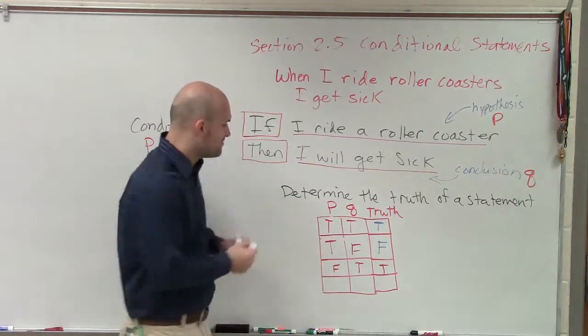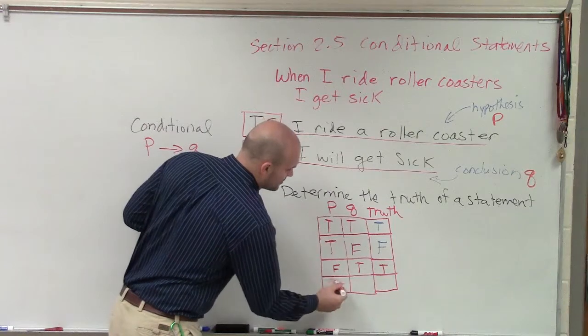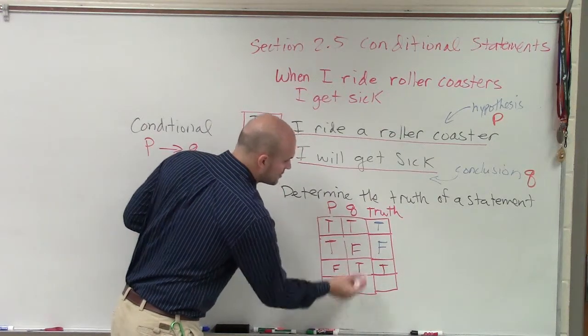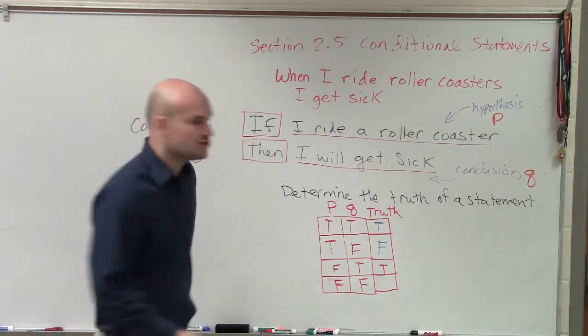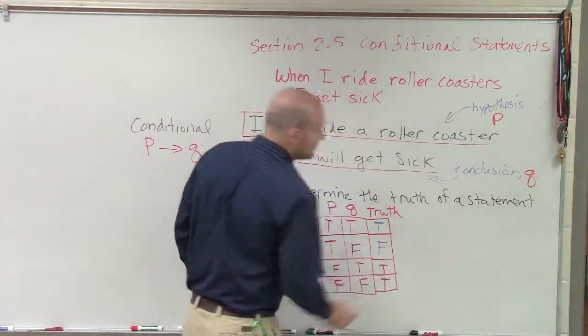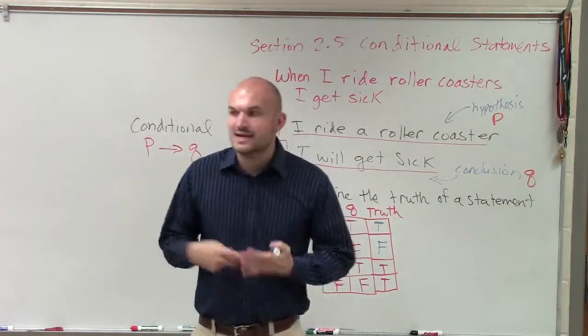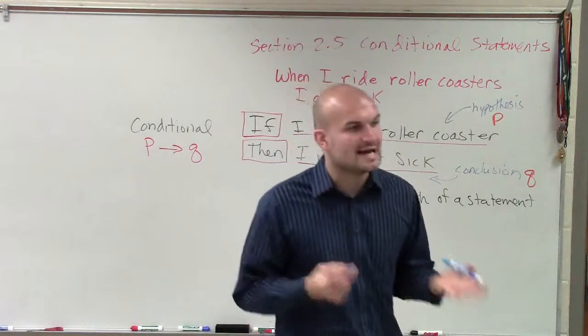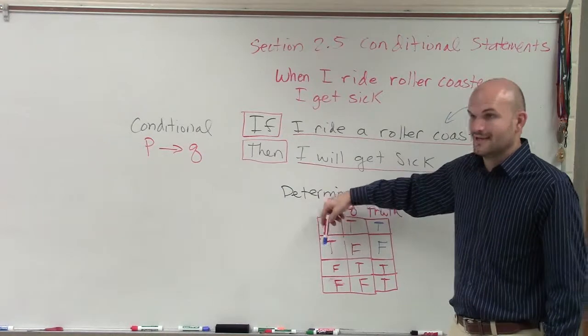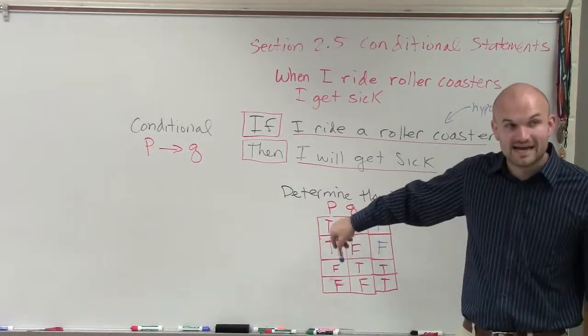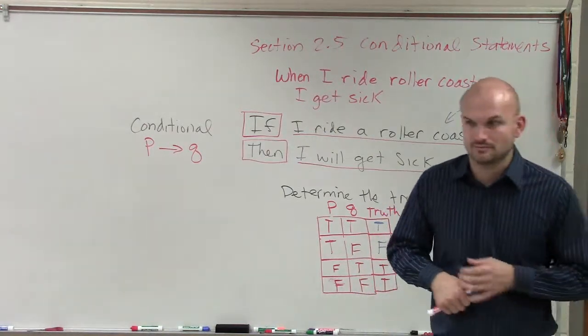And then the same thing. If my premise or my hypothesis is false, and my hypothesis or my conclusion is false, guess what? My statement is still true. Alright? The only time you guys are going to have a false statement is when we can be able to provide a counter example. As long as my hypothesis is true, and then I go against that with my conclusion, that's the only time we're going to have a false statement.